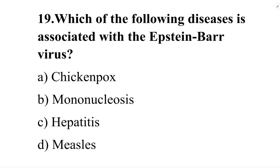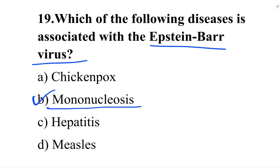Next question: which of the following diseases is associated with the Epstein-Barr virus? Option A: chicken pox. Option B: mononucleosis. Option C: hepatitis. Option D: measles. The correct answer is option B, mononucleosis.